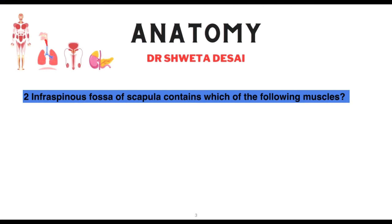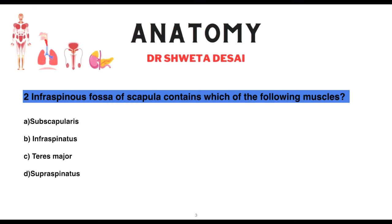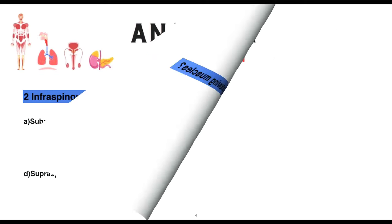The infraspinous fossa of the scapula contains which of the following muscles: subscapularis, infraspinatus, teres major, or supraspinatus? The infraspinous fossa contains infraspinatus.